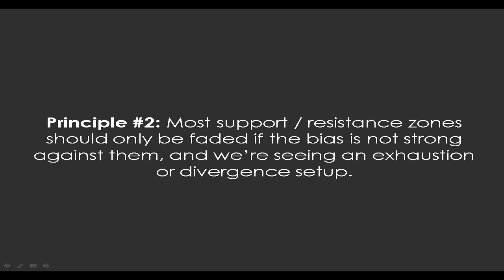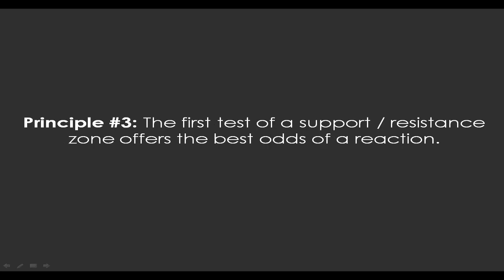If the bias is strong against a zone and it's not an automatic fade zone, just let it go. Here we're saying strong bias — if you're moving towards a resistance zone the bias is bullish, but as long as it's not overwhelmingly bullish in terms of bigger context and market internals, you can fade it if you see some sort of exhaustion or divergence setup. Some traders think you just highlight zones and always trade there, but you have to read the market.